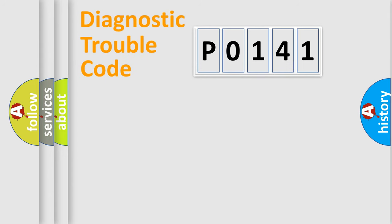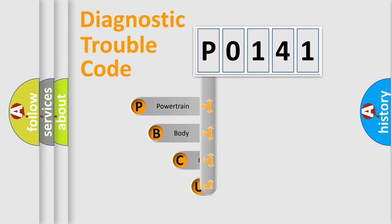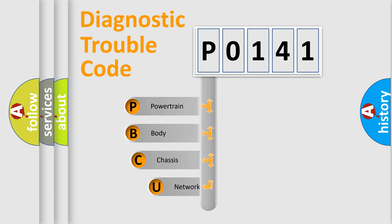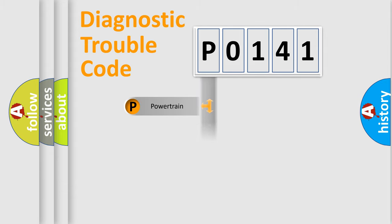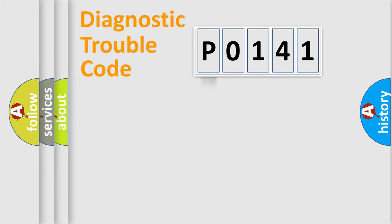Let's do this. First, let's look at the history of diagnostic fault code composition according to the OBD-II protocol, which is unified for all automakers since 2000. We divide the electric system of the automobile into four basic units: Powertrain, Body, Chassis, Network.